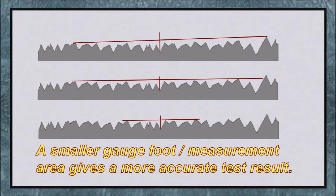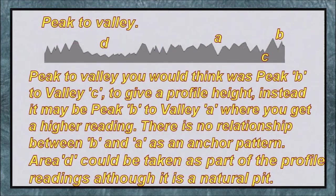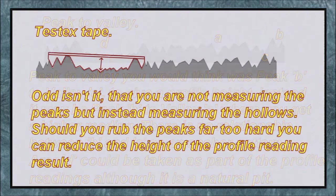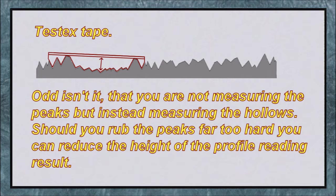Peak to valley — you would think — was peak B to valley C to give a profile height. Instead, it may be peak B to valley A where you get a higher reading. There is no relationship between B and A as an anchor pattern. Area D could be taken as part of the profile readings, although it's a natural pit. Testex tape: odd isn't it that you are not measuring the peaks, but instead measuring the hollows. Should you rub the peaks far too hard, you can reduce the height of the profile reading result.